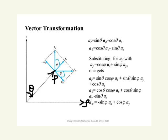If we draw the unit vectors, we have AR pointing in the R direction, and A_theta pointing in the direction of increasing theta. By knowing that this angle is theta, we know that there is another angle theta between AR and AZ. So we can decompose AR into two vectors: AR is equal to cosine theta in the z direction plus sine theta in the direction of A_rho.